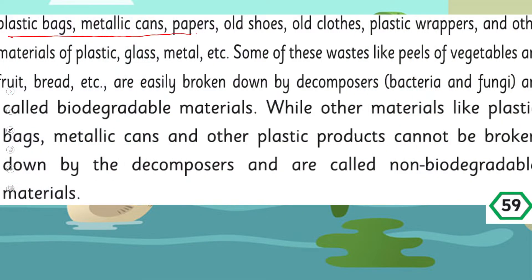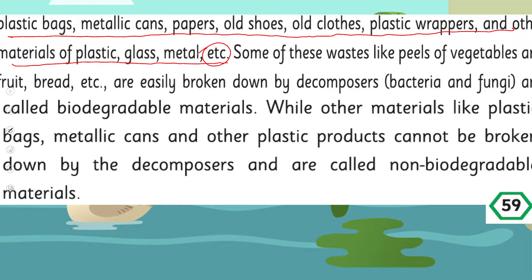Other waste includes plastic bags, metallic cans, paper, old shoes, old clothes, plastic wrappers, and other materials made of plastic, glass, and metal. We also waste things made of metal and glass, in addition to the organic waste.